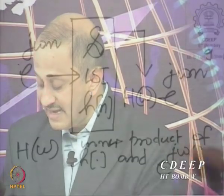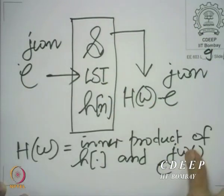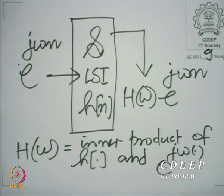Another way of understanding this is through the notion of eigenvalues and eigenvectors. What we are saying in effect is that when we put the sequence into the system, what comes out is the same sequence multiplied by a constant. This is not going to happen for all kinds of sequences.